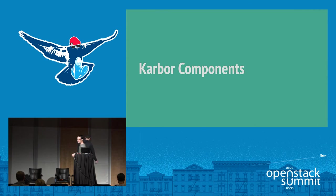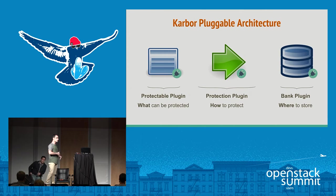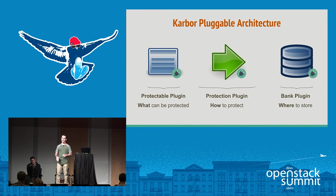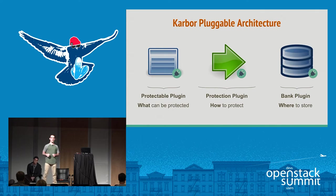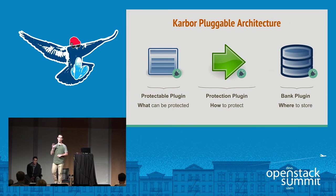Let me speak about Karbor's components. Karbor is based on a pluggable architecture with three types of plugins. The first is the protectable plugin — about finding new resources Karbor can protect: servers, volumes, shares, any resource. The second is the protection plugin — about extending how Karbor protects and restores those resources; you write a matching protection plugin for each protectable. The third is the bank plugin, which dictates where Karbor puts its data — a generalization of object storage supporting Ceph, Swift, S3, or any object storage.